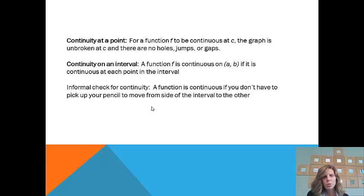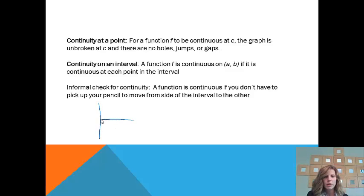An informal check for continuity that we'll usually use — though we can't use it formally — is: if you don't have to pick up your pencil to move from one side of the interval to another, then the function is continuous. Looking at this example, if I start at the left side of my graph and try to trace across, I've got to jump over the hole. Since I had to pick up my pencil, this is a discontinuous graph.